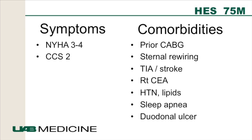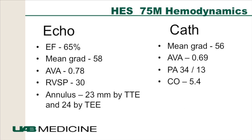We'll start with a case: a 75-year-old gentleman with class 3 to 4 heart failure and Canadian class 2 angina. He's had prior bypass surgery, prior strokes, and right carotid endarterectomy. He's hypertensive, dyslipidemic, has sleep apnea, and a history of duodenal ulcer. He comes in with shortness of breath. His echo showed an EF of 65%, mean gradient of 58 mmHg, valve area of 0.78, and an RV pressure of 30 mmHg.